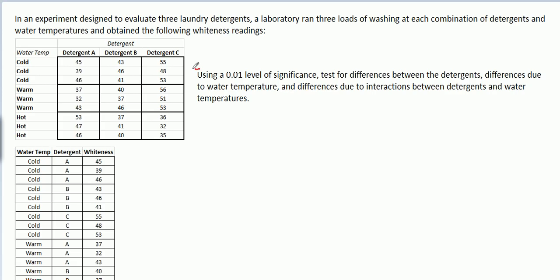What is it exactly that we want to do? We want to use a 1% level of significance — remember, that's alpha — to test whether there are differences in a few things. First, we want to see if there are differences between the detergents — whether all the detergents perform the same or not. Next, we want to see if there are differences due to the water temperature — whether all the water temperatures produce the same whiteness reading, the same results in washing.